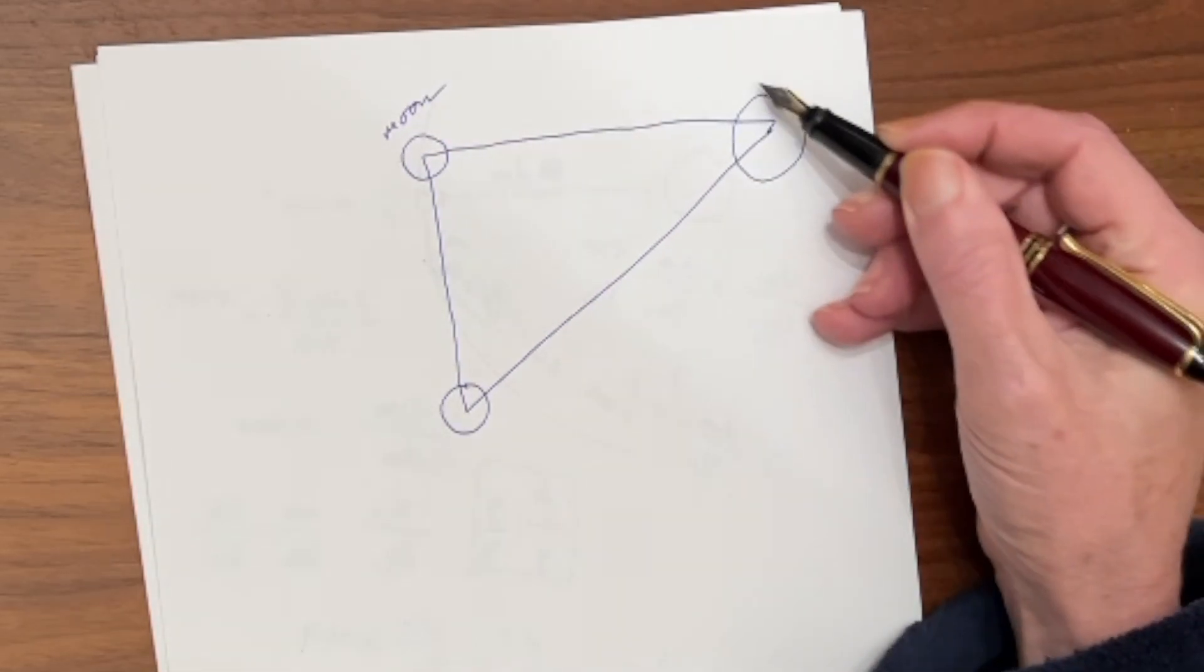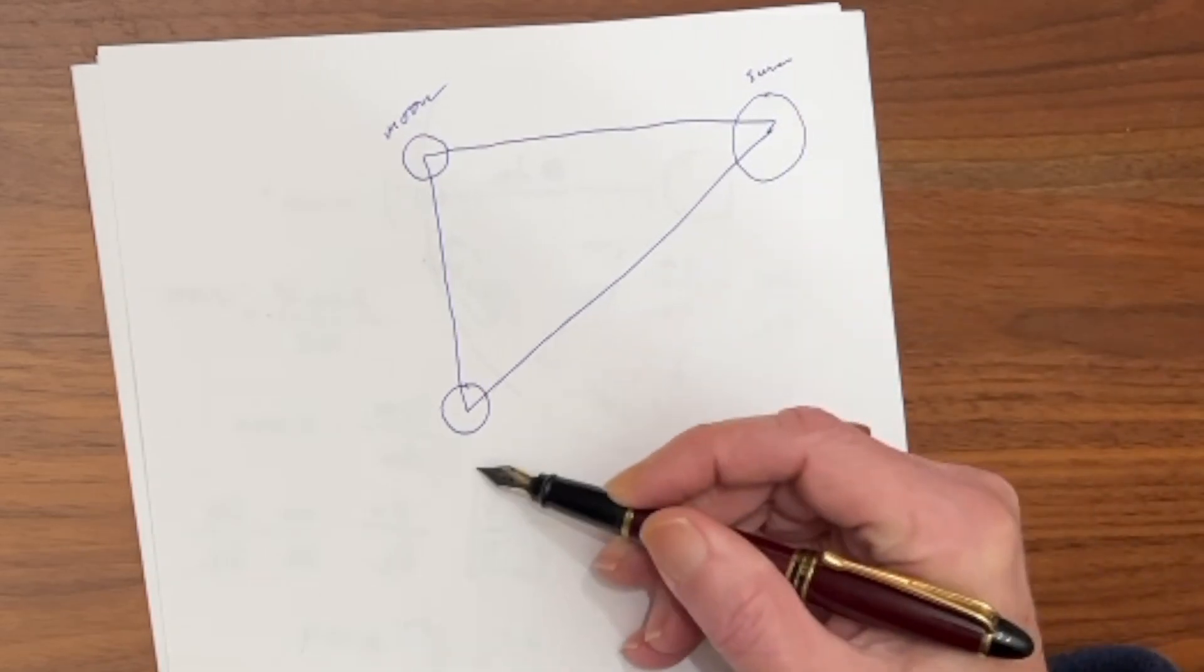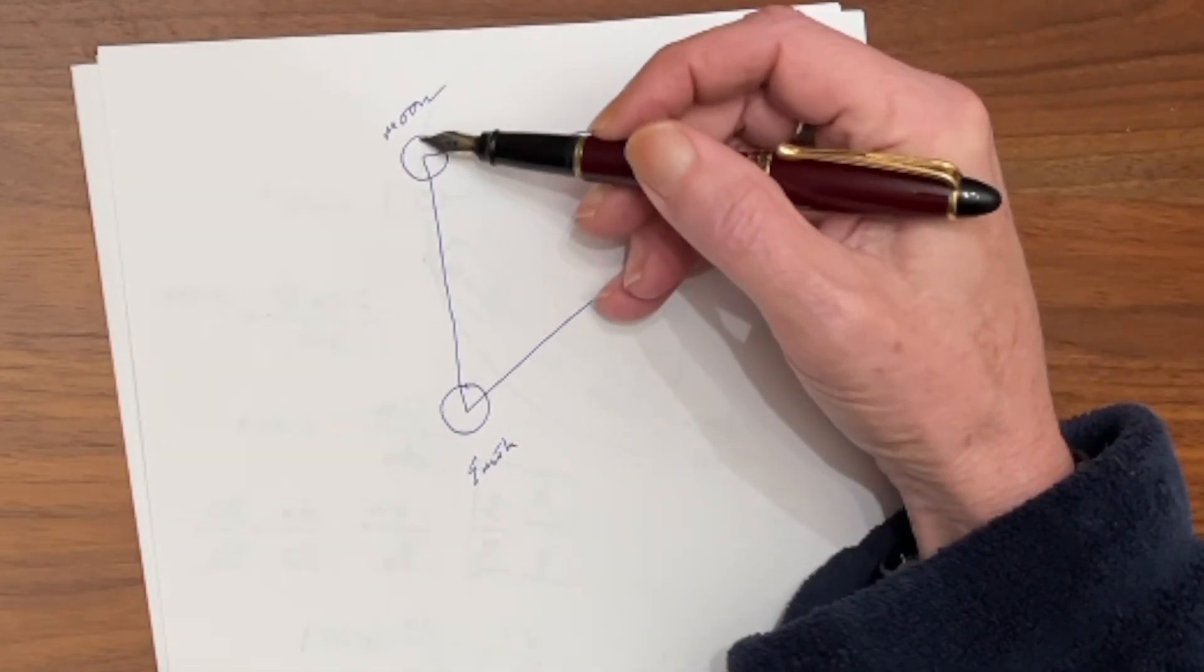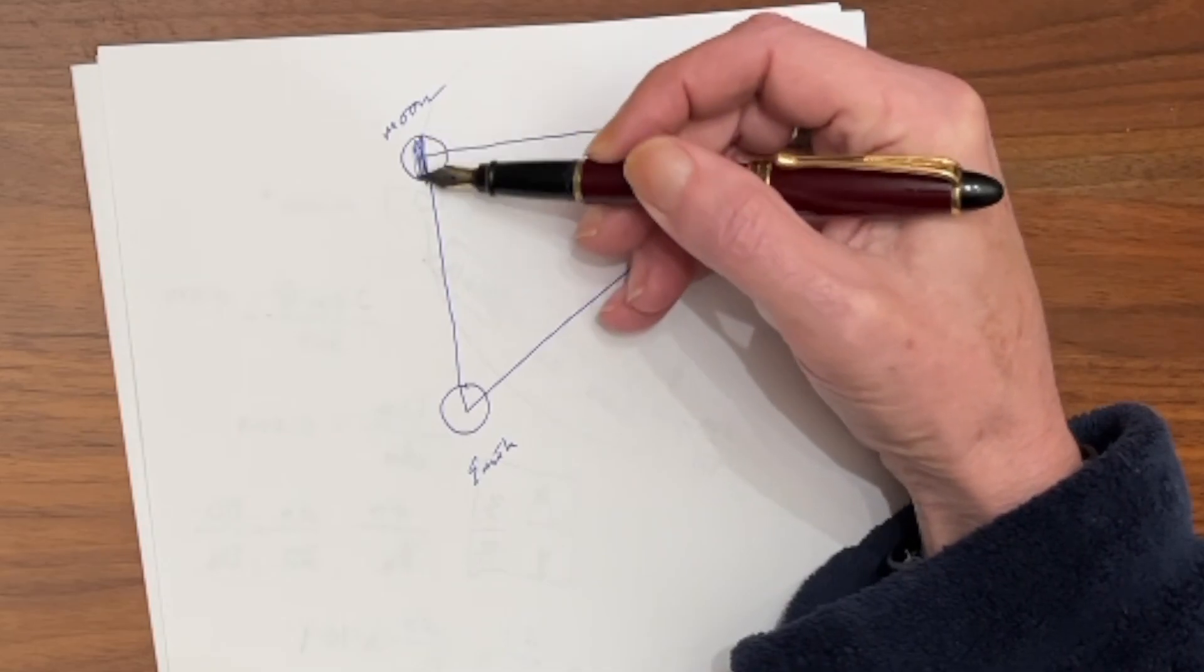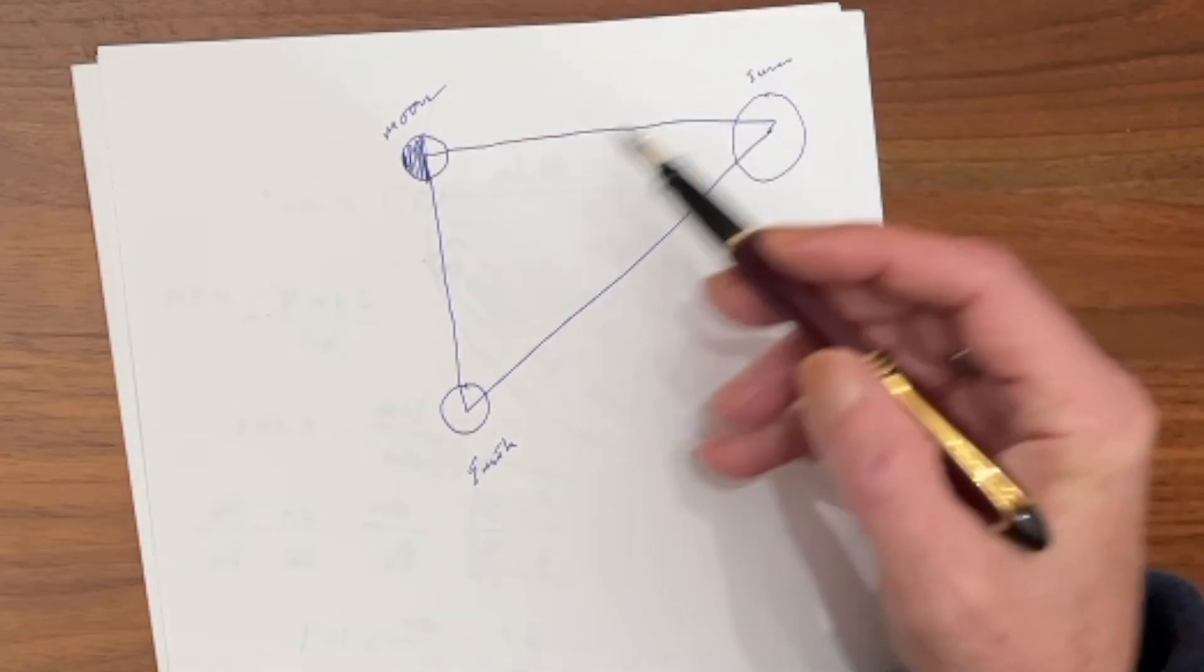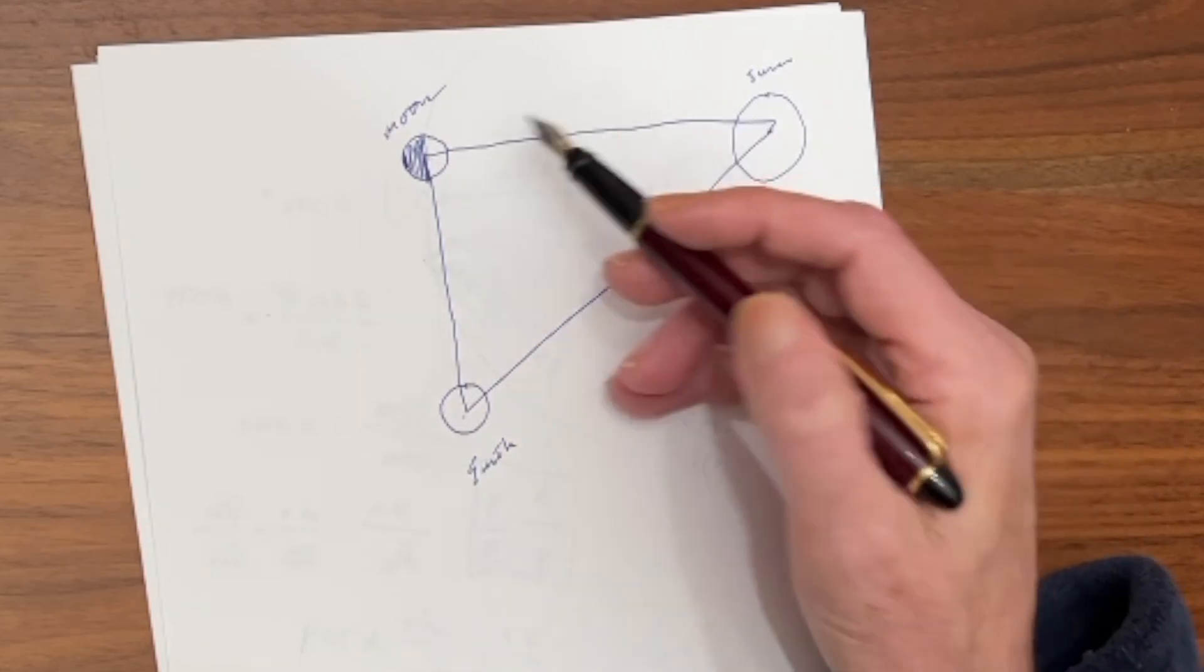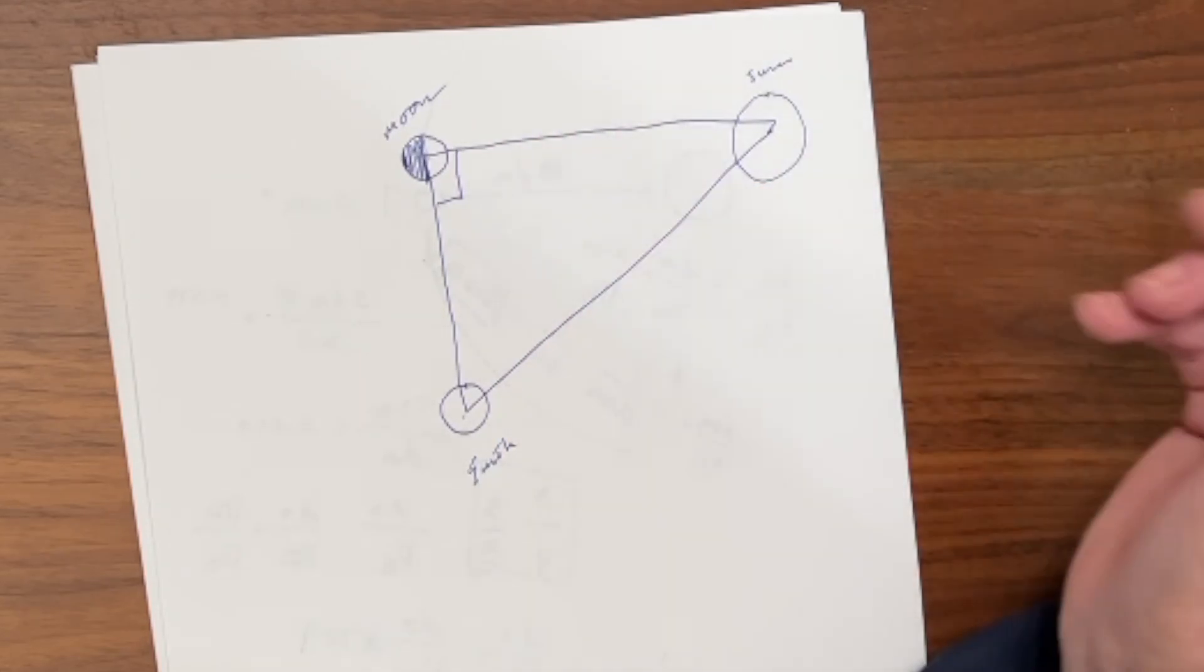So if we have the moon here, and we have the sun out here, and this is our earth here, he realized that if he was looking at the half moon, the sun, the moon, and the earth were forming a right angle here.